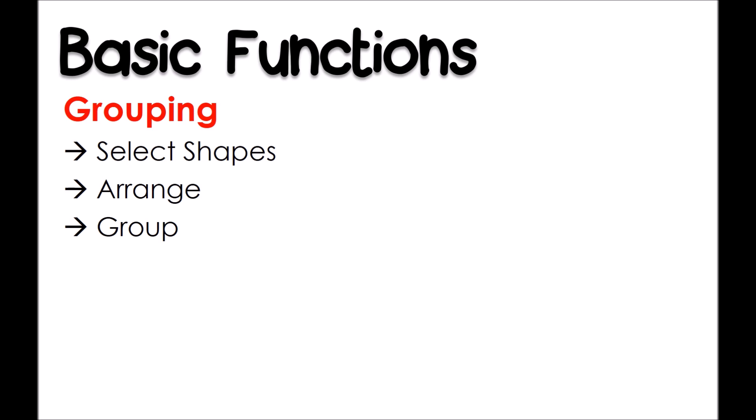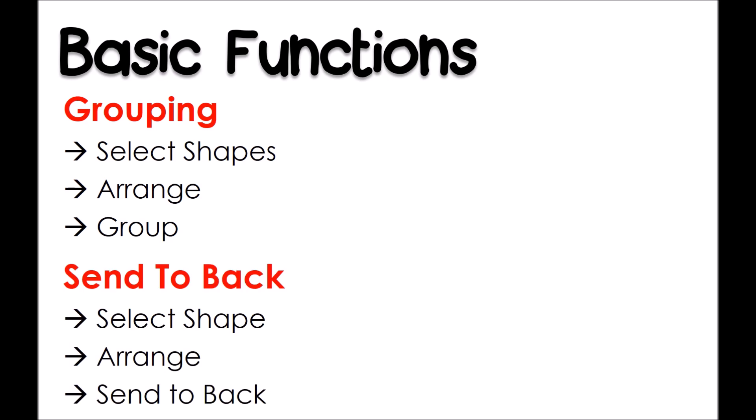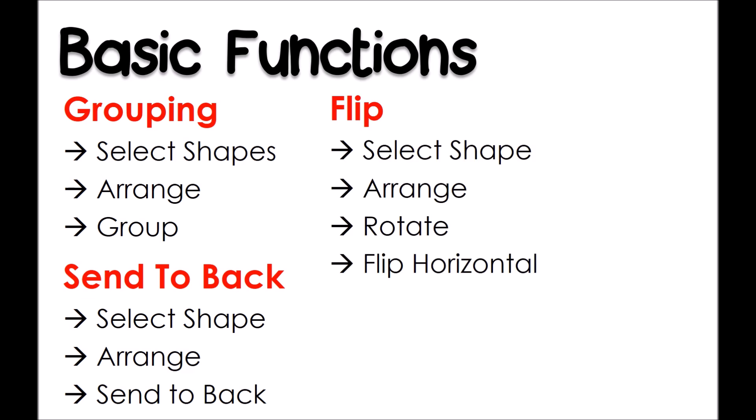Here are some basic functions that you will find useful in your drawing process. First is grouping — I like to call this my magic glue, as this is what you use to put together different shapes that you have drawn into one. Second is send to back, which is very useful when you need to rearrange the order of the different shapes that you have drawn. Third is flip — we use flip when we need to create a mirror image of a particular shape.